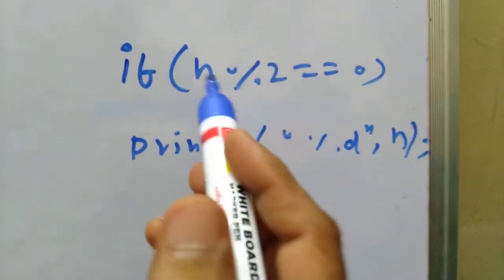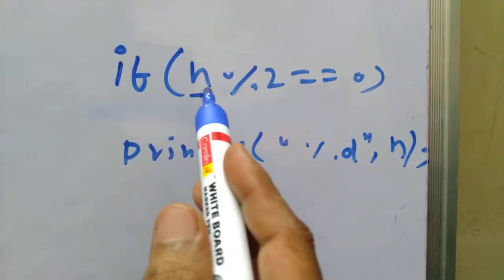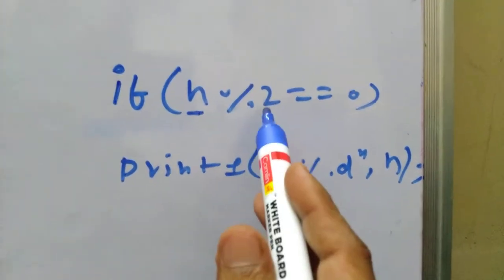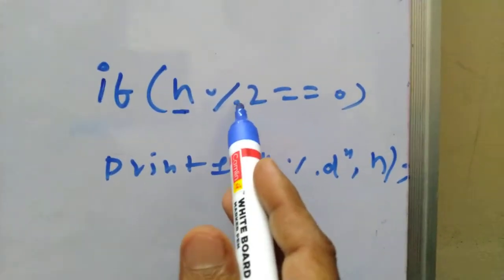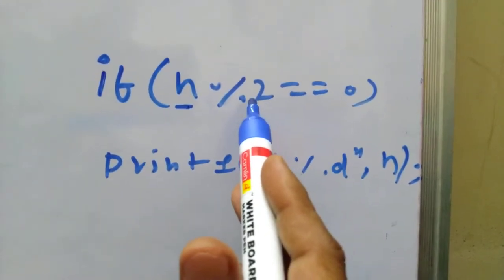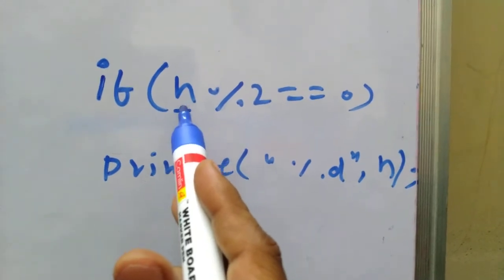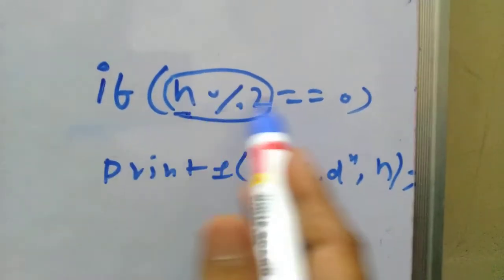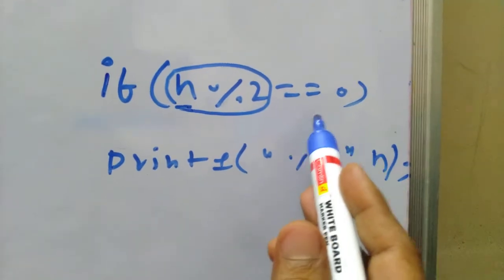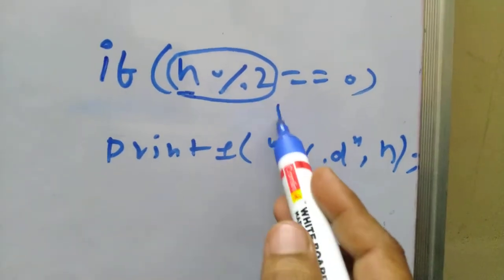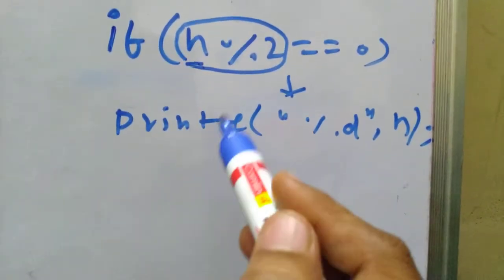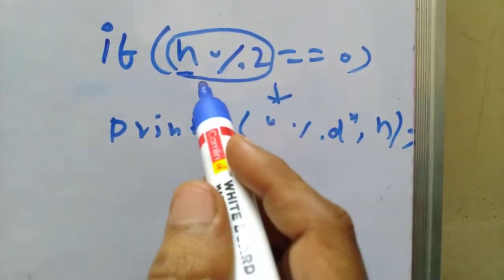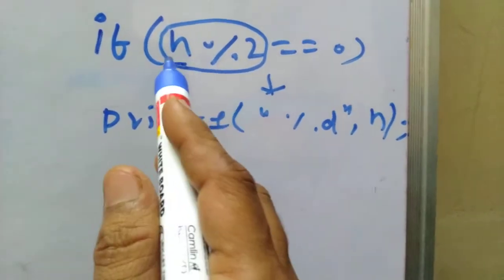The logic is: we take one number, and if that number modulo 2 gives a remainder of 0, then that number is an even number. If it is an even number, we have to print that number.